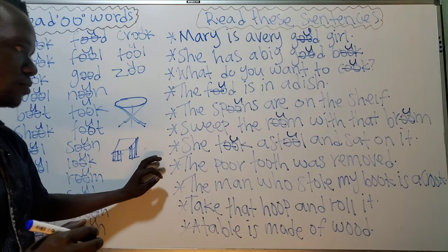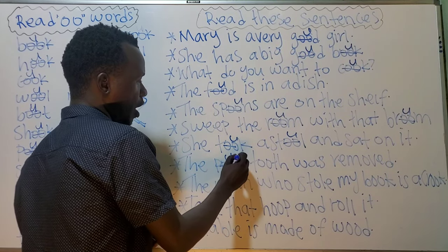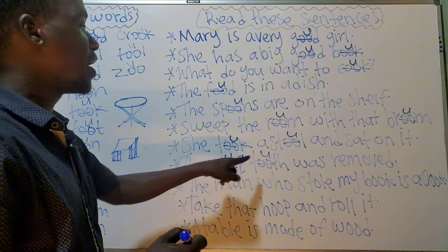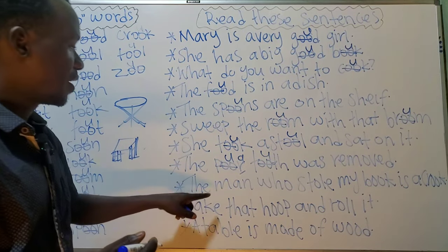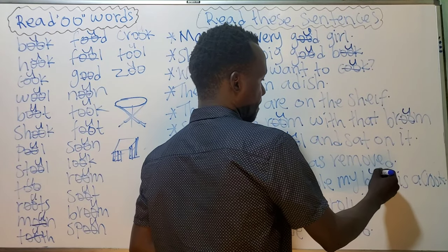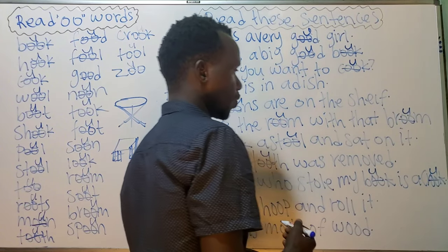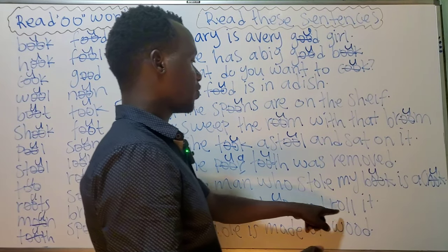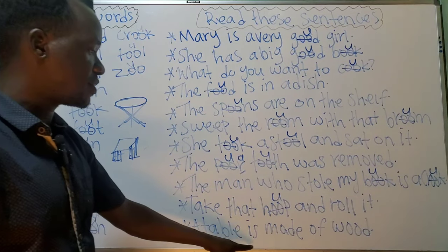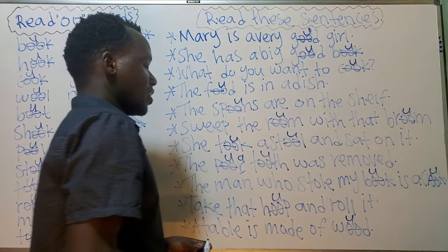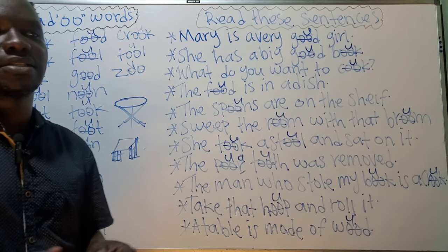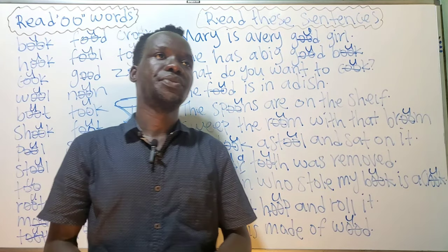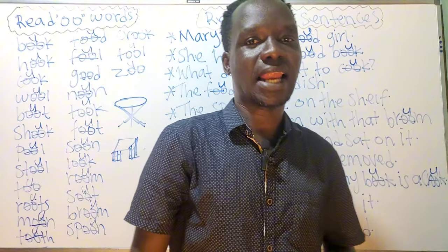The poor tooth was removed — remember 'r' changes into an 'a' sound. The man who stole my book is a crook. Take that hoop and roll it. A table is made of wood. Just simple like that! Thank you so much for subscribing — may God bless you, and I'll see you in the next class. Ciao!